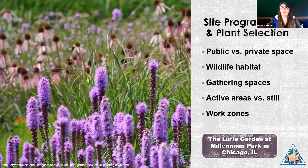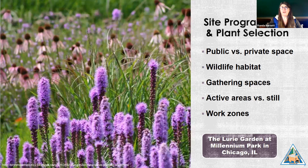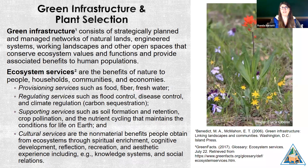In addition to the users of the space, consider whether you'll be incorporating gathering spaces, spaces for certain activities, or perhaps room for stillness and quiet. Will your project need to incorporate work zones? Working landscapes may include a produce garden or a rainwater management practice. Green infrastructure consists of strategically planned and managed networks of natural lands, engineered systems, working landscapes, and other open spaces that conserve ecosystem values and provide benefits to human populations.